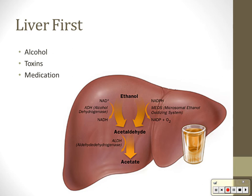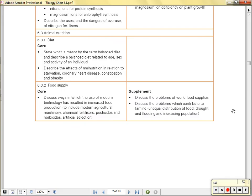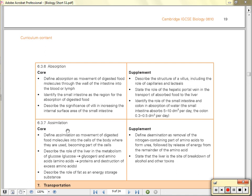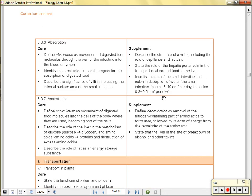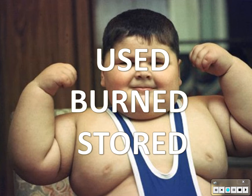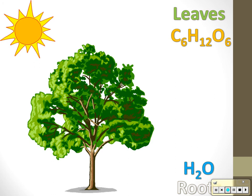Your liver has to deal with everything first — toxins, alcohols, poisons, and medications — so be nice to your liver. The colon's only job is to absorb water. The small intestine does absorb water too, but its main job is to absorb glucose, amino acids, and similar. Fats are either used, burned, or stored.